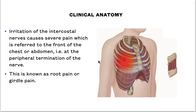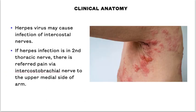Irritation of the intercostal nerve causes severe pain which is referred to the front of the chest or the abdomen, at the peripheral termination of the nerve. This is also known as the girdle pain or the costal pain. Herpes virus may also cause infection of the intercostal nerve. If the herpes infection is in the second thoracic nerve, there is referred pain via the intercostal brachial nerve to the medial side of the arm.